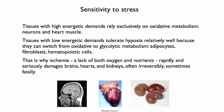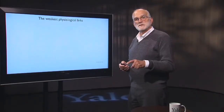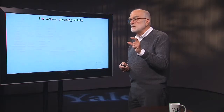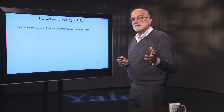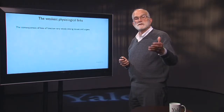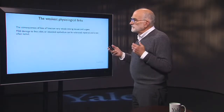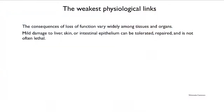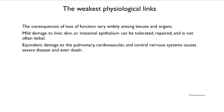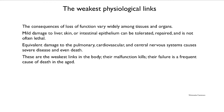Not all of the physiological links in the body are equally strong. If you think of it as a chain with a weak link, it's good to pay attention to what that weakest link is. If function is lost in various organs, sometimes it doesn't make much difference, but in some organs it means the organism would die right away. A little bit of damage to liver, skin, or intestinal epithelium will normally be tolerated and repaired. The same amount of damage to the pulmonary, cardiovascular, or central nervous systems causes severe disease and even death. These are the weakest links — their malfunction kills, and their failure is often the cause of death in old people.